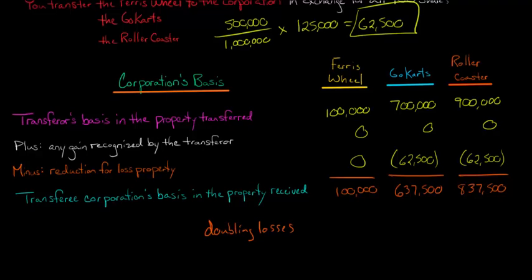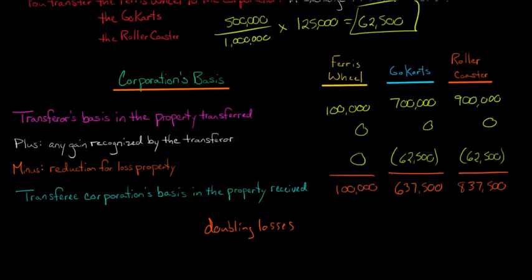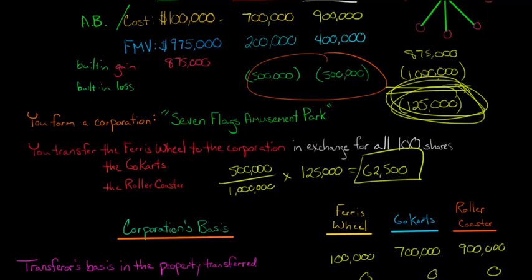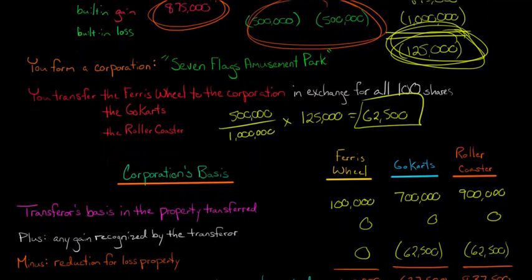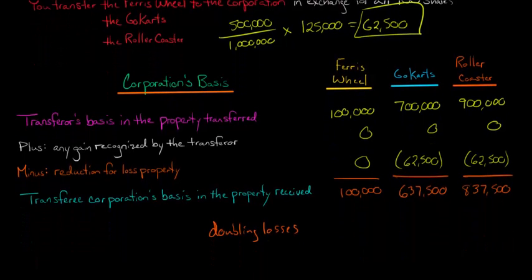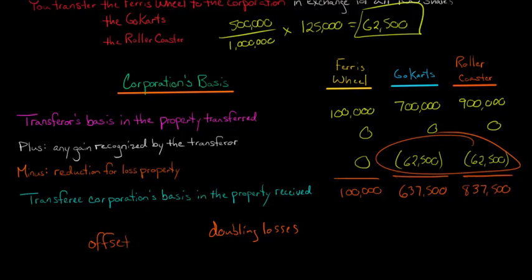From a tax strategy perspective, it's not ideal for the corporation to lose basis. One strategy is to also transfer property with built-in gains — if the Ferris wheel's built-in gain had been $1 million instead of $875,000, it would have fully offset the losses and there'd be no basis reduction at all. If you don't have property with built-in gains to transfer, another option is to just sell the loss property, recognize the loss, get cash, and then contribute the cash to the corporation — rather than letting the basis disappear forever.